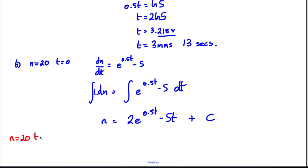You know your boundary conditions that n were 20 when t is 0, so you sub them in. 20 equals, if we put e to the 0 you get 1, so I'm going to get 2 minus nothing plus c.